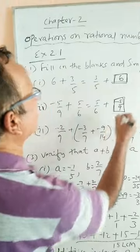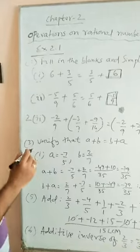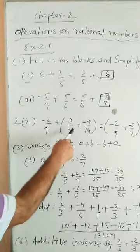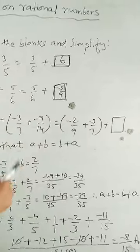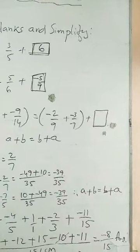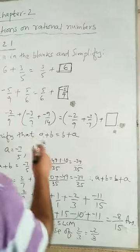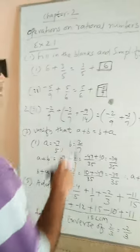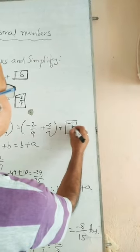In second question, bit number 2, minus 2 by 9 plus minus 3 by 7 plus minus 9 by 14, what number is missing? That is to be written in the blank. So, here, minus 9 by 14 is missing. So, we shall write minus 9 by 14.